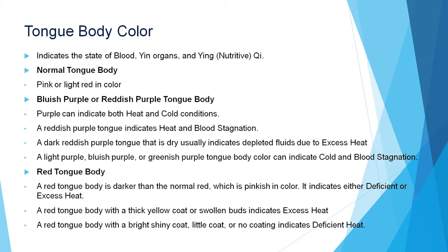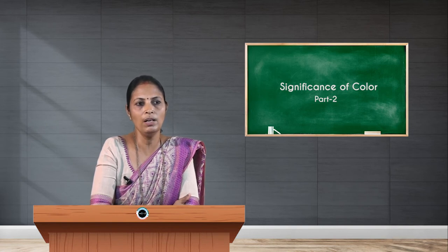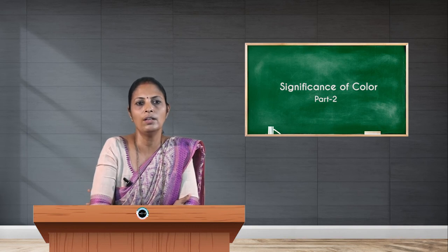A dark red-purple tongue is usually dry and indicates depletion or dehydration due to excess heat. A light purple, bluish-purple, or greenish-purple tongue body color can indicate cold and blood stagnation.